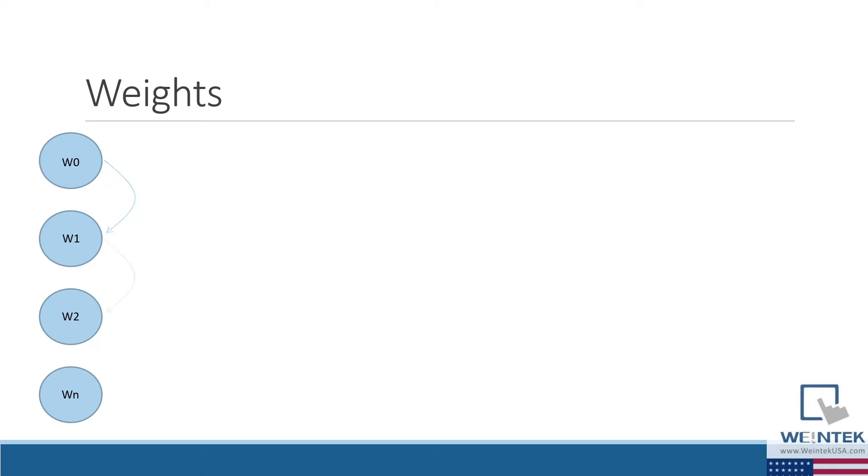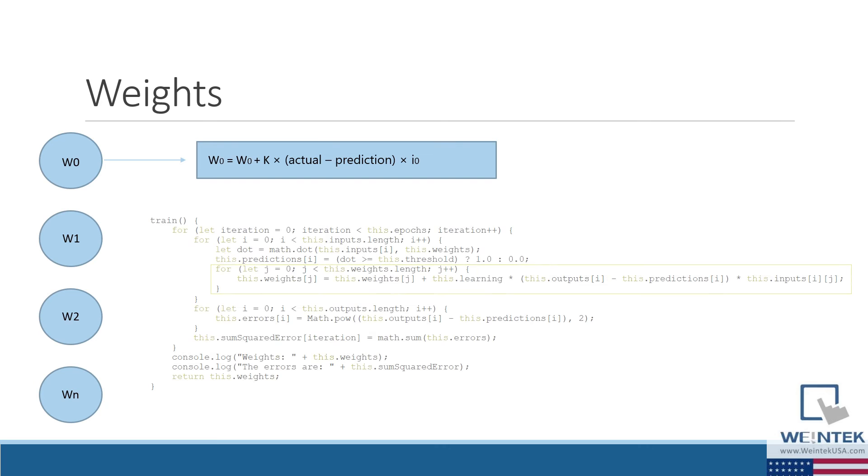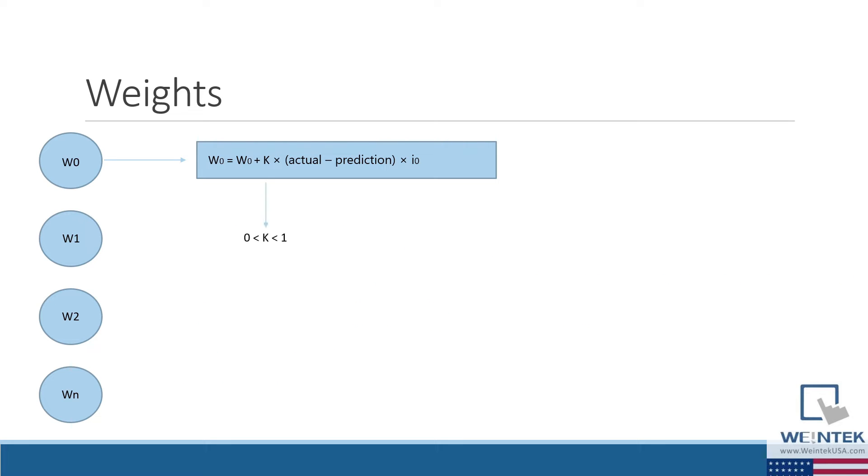To adjust the weights, we iterate through the array and set each weight equal to itself, plus the predefined learning rate multiplied by the difference between the actual and predicted output and the current input. The learning rate is a small factor, less than one, that determines how much the weight will be adjusted.